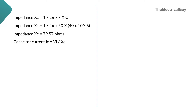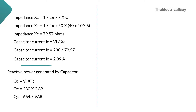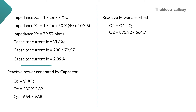Dividing line voltage by capacitor impedance gives the capacitor current Ic = 230 / 79.57 = 2.89 amperes. The reactive power generated by this capacitor is Qc = VL × Ic = 230 × 2.89 = 664.7 VAR. In Part 1, the motor was drawing 873.92 VAR from the line. Since the capacitor now provides 664.7 VAR locally, the burden on the transmission line reduces. The net reactive power absorbed = 873.92 − 664.7 = 209.22 VAR.